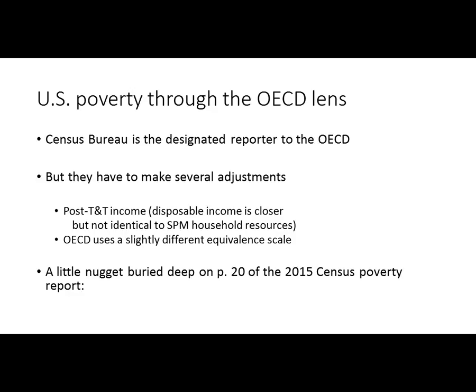If we wanted to look at poverty in the United States through the OECD's framework, we would learn something pretty interesting. The OECD gets its data from member countries — it doesn't conduct surveys of its own. In the United States, the Census Bureau is the designated agency to report income and poverty data. They have to make several adjustments: reporting disposable income, calculating incomes post-tax and transfers, pulling out non-cash in-kind benefits, and adjusting for the OECD's slightly different equivalence scale.